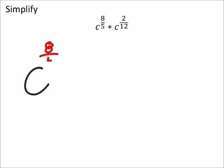And so we're going to take that 8 fifths and we'll add it to the 2 twelfths. Because the bases are the same, it's just being multiplied. So we need common denominators on this thing.